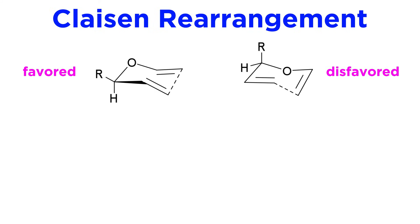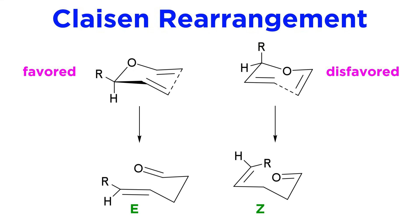For Claisen rearrangements where substituents are present, given the chair-like transition state, substituents will prefer to occupy pseudo-equatorial positions rather than pseudo-axial, and the olefin products will tend to form with E configuration rather than Z.